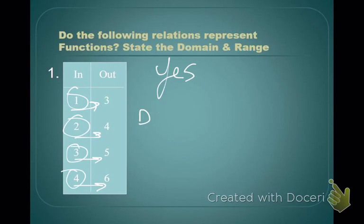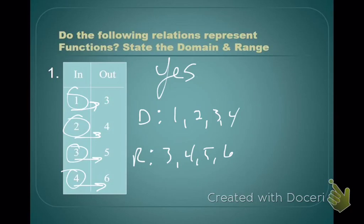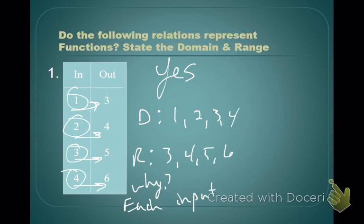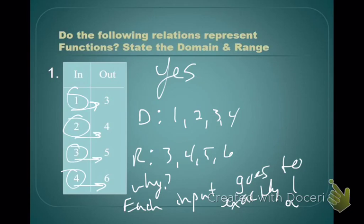The domain of this function is just the set of inputs: 1, 2, 3, 4. The range is just the set of outputs: 3, 4, 5, 6. In your notes it asks you why this is a function. Because each input goes to exactly one output. This is a function.